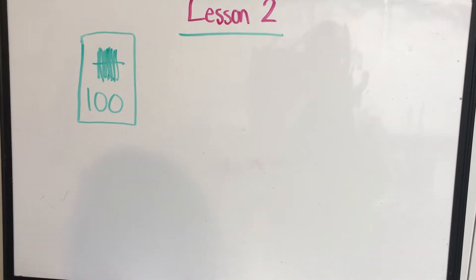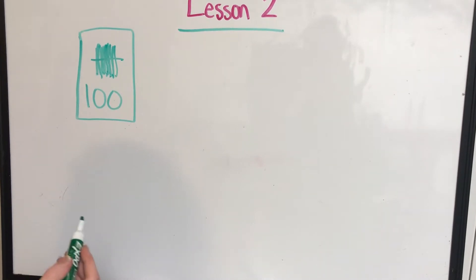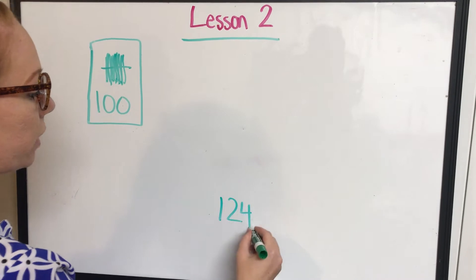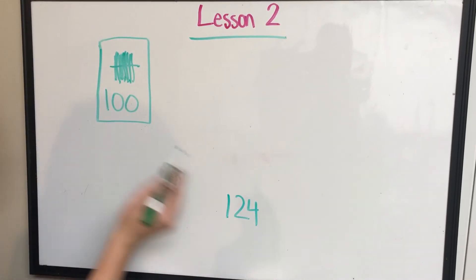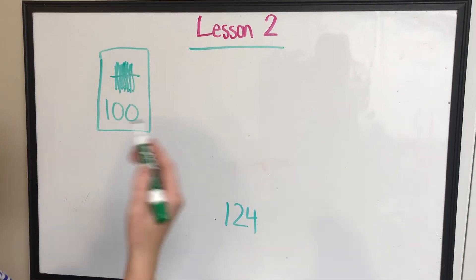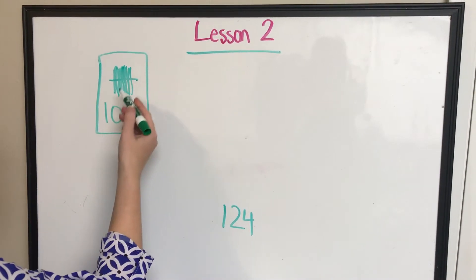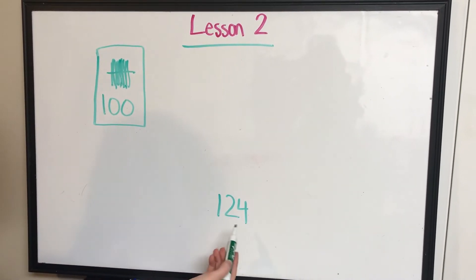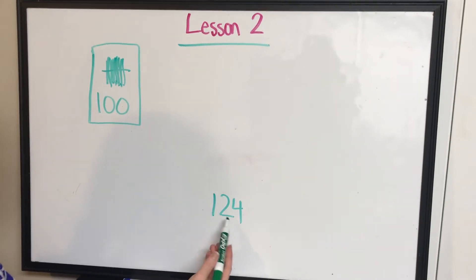Now the problem is going to want you to draw pictures that you would use to count up to the number 124. So we're already at 100. We're trying to get to 124. The student should think to themselves, can I add another hundreds block? No, because 100 plus 100 would be 200. And we're trying to get to 124.